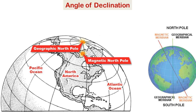Angle of declination arises because the magnetic north pole is about 500 miles or 800 kilometers from the geographical north pole. So you can imagine this like a magnetic axis which is running across the earth and crossing the geographical north-south axis.